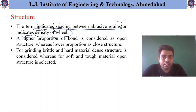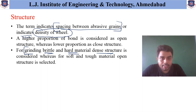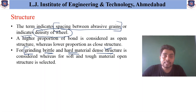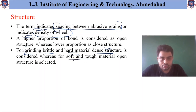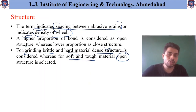For grinding brittle and hard materials, a dense structure is required because larger forces are needed for material removal during friction. Whereas for soft and tough materials, an open structure can be used. The open and closed structure is defined based on whether the space between particles is comparatively large or small.